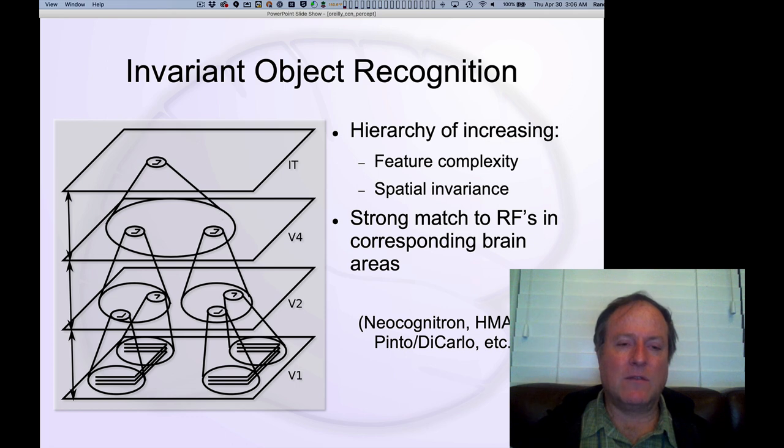Critically, by doing these incrementally you avoid this major problem of binding errors where, for example, you don't want to have a high level representation of this kind of backward C detector be activated by a feature down here on the left hand side and another feature over here on the right hand side.